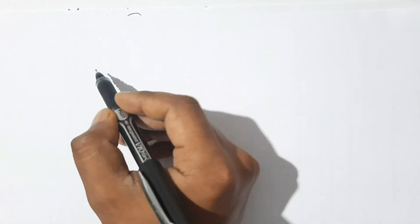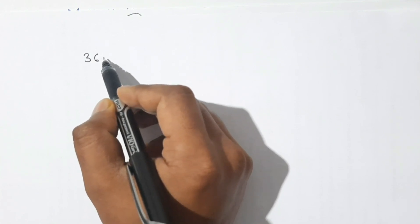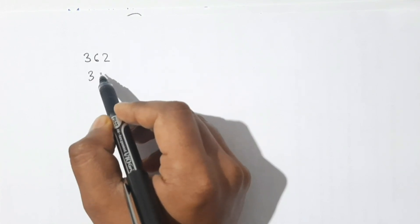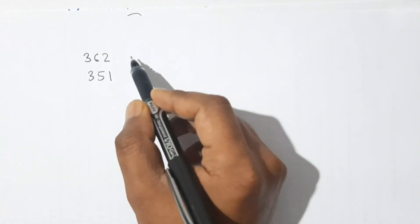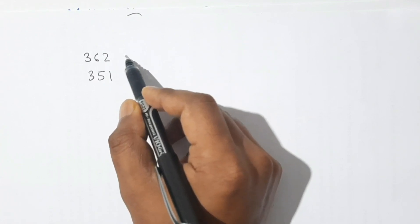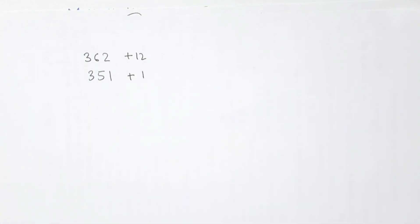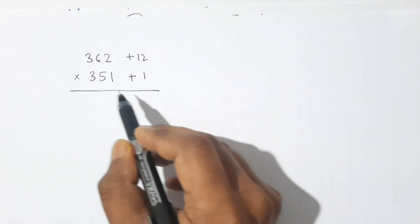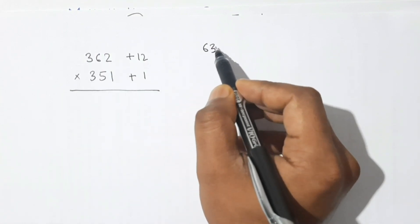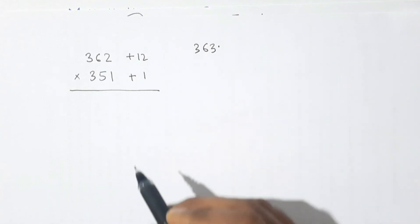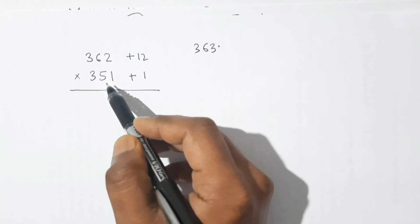Next I will take 362 and 351. Here both numbers are nearer to 350, so our base is 350. 362 is 12 more than 350 (plus 12) and 351 is 1 more than 350 (plus 1). First we add 1 to 362: 362 plus 1 is 363.